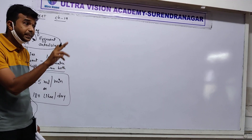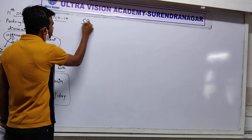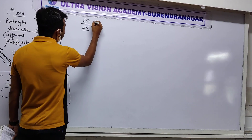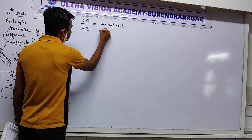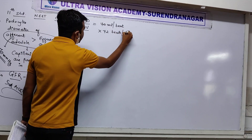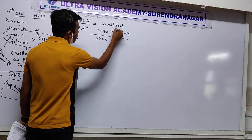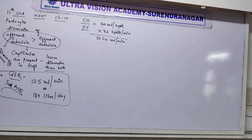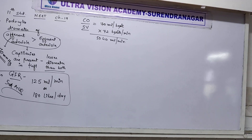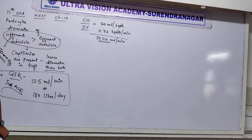Cardiac output equals stroke volume multiplied by heart rate: 70 ml per beat multiplied by 72 beats per minute equals 5040 ml per minute. So approximately 5 liters of blood passes through the heart within 1 minute.